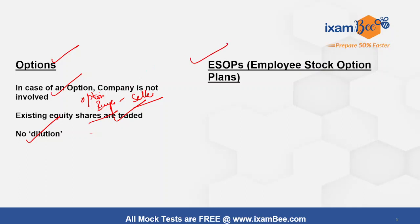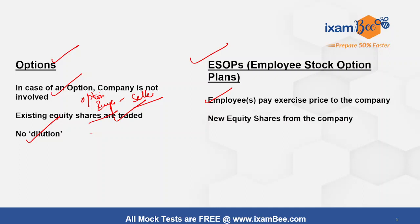Employee stock option plans (ESOPs): the employee is given an option to pay the exercise price to the company to get equity shares. New equity shares from the company are issued to these employees. ESOPs are given as part of the salary of a key employee, wherein they are given an option to pay the exercise price to the company and get new equity shares.